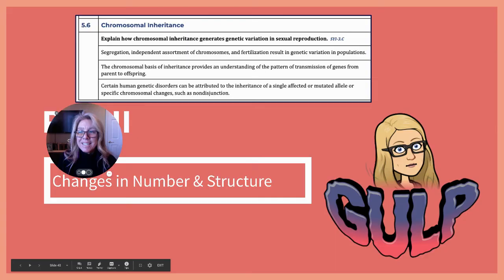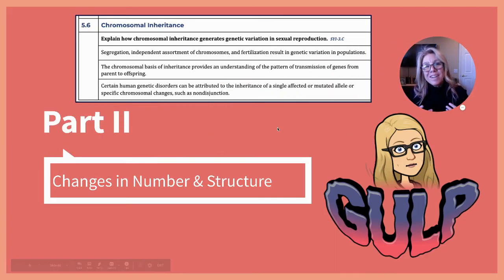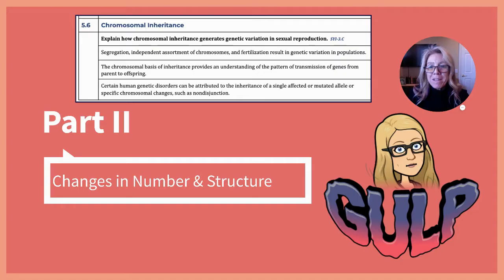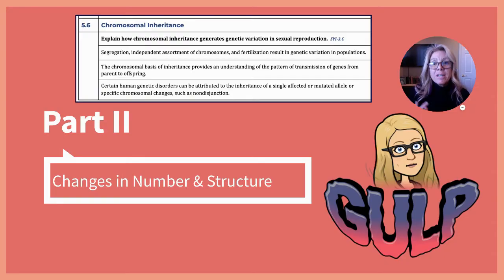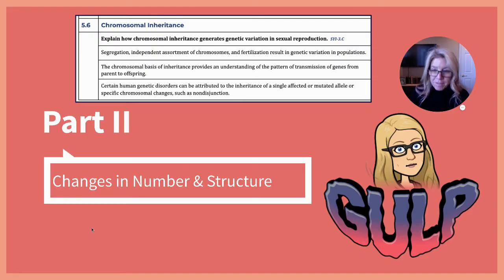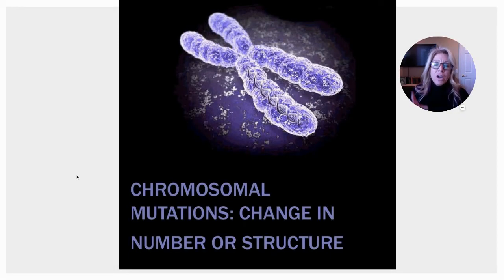This is under unit guide 5.6. Any changes in chromosomes for humans are going to have some consequences. Plants seem to handle these changes a little bit better than us. The third topic we're focusing on is: certain human genetic disorders can be attributed to the inheritance of a single affected or mutated allele, or specific chromosomal changes such as non-disjunction. A chromosomal mutation is a change in the number of chromosomes you have or in the structure.